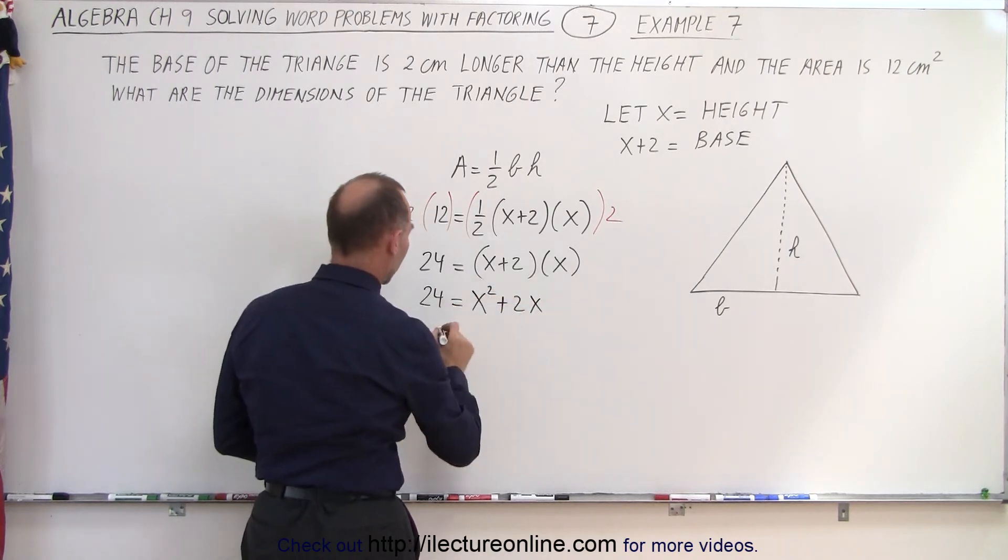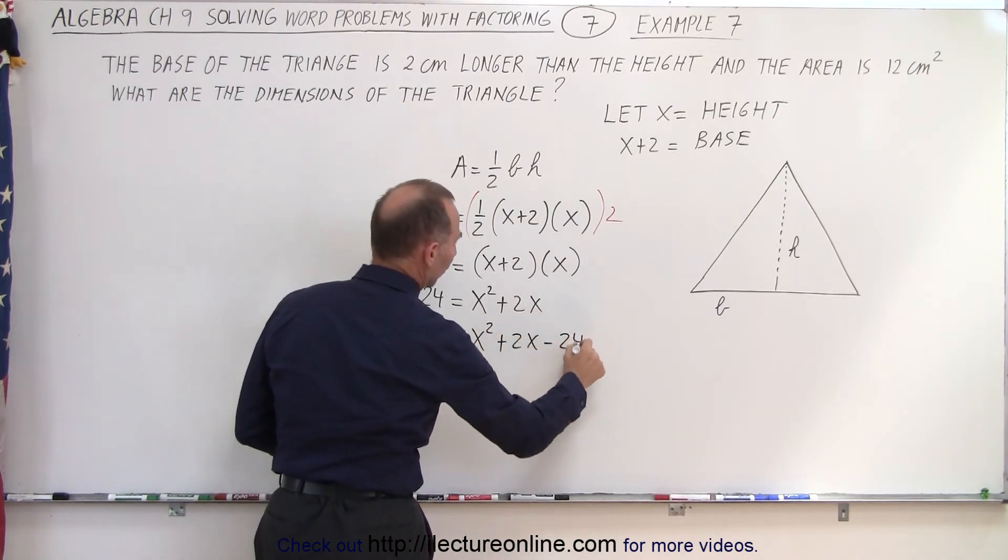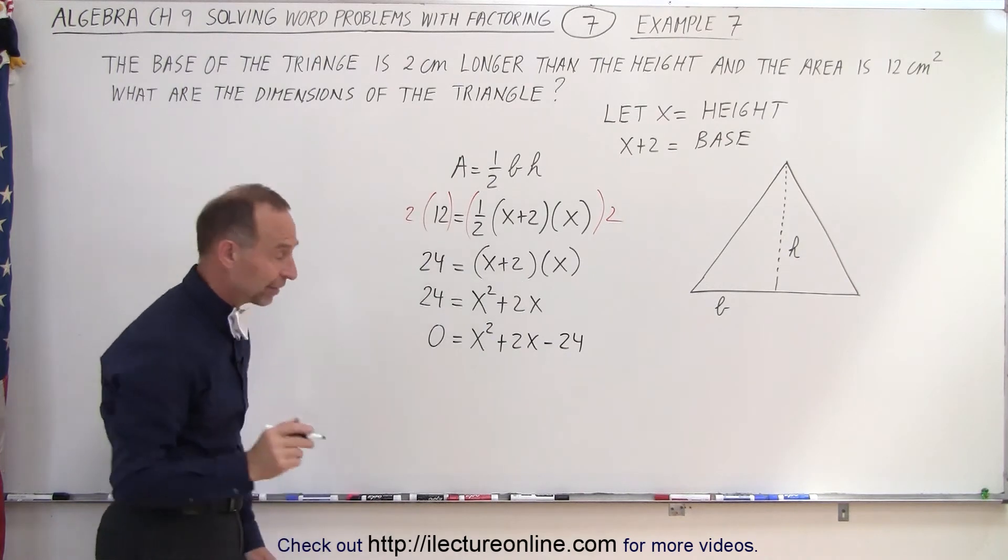Moving the 24 across, we get 0 equals x squared plus 2x minus 24. Now we can go ahead and factor that.